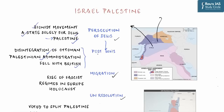Two things happened simultaneously in favor of Jews. First, the disintegration of the Ottoman Empire — an empire which claimed to be the protector of Muslims — which had previously prevented Jewish inflow into the region. The empire disintegrated around 1915-16. Second, the territory of Palestine, identified under the Zionist movement as the destination for Jewish migration, fell under British occupation. The British were quite sympathetic to the cause of protecting Jews and addressing their persecution.